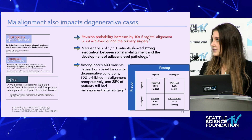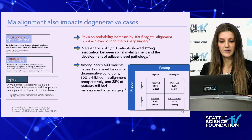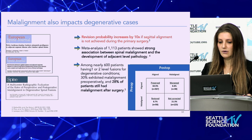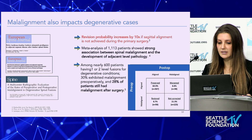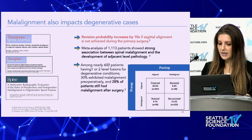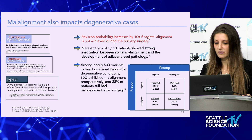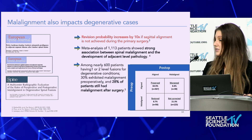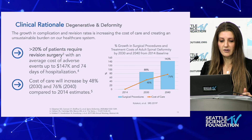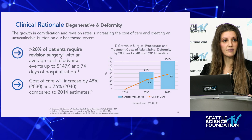It's not just deformity — degenerative cases make up most of what spine surgeons do in practice, and revision probability increases by 10 times if sagittal alignment is not achieved during the primary surgery. A meta-analysis of over 1,000 patients showed a strong association between spinal malalignment and the development of adjacent level pathology. We can see that we are not only not correcting patients, but actively making some worse — 6.6 percent of patients were malaligned post-operatively in one study, which is kind of a never event.